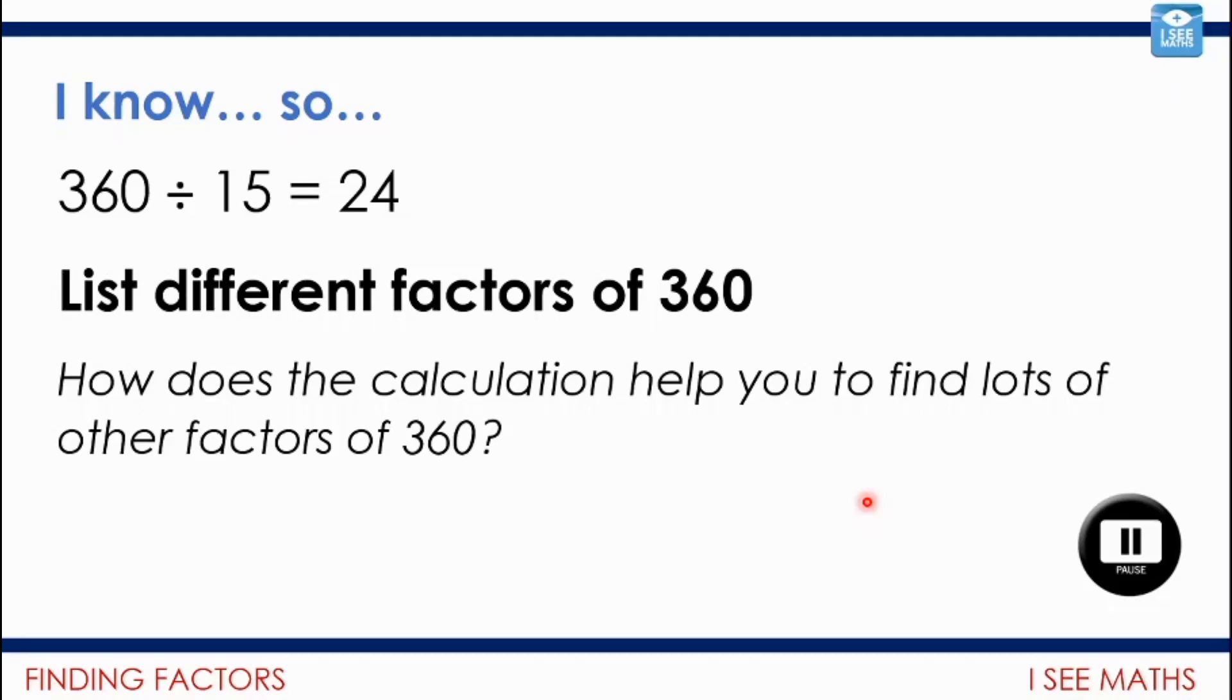Okay, so factors of 360. Well, of course, 15 and 24 are. They're given here because 24 multiplied by 15 is 360 and so on. But also 5 must be. It's a factor of 15 and 3. And 8 is a factor of 24 and 12 and so on. So lots of other examples you could have. 360 has got an amazing number of factors actually when it's broken down.